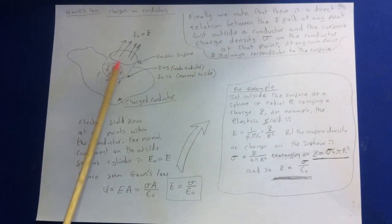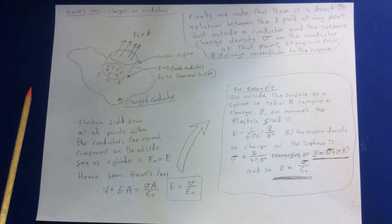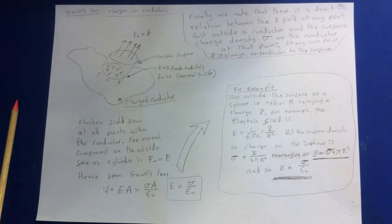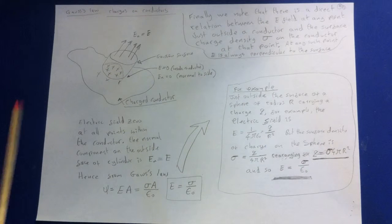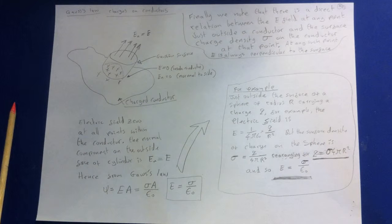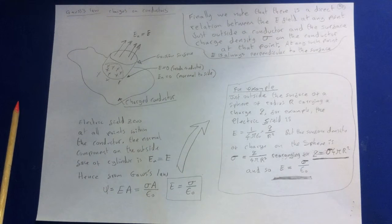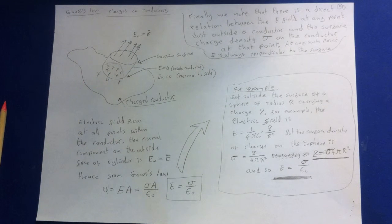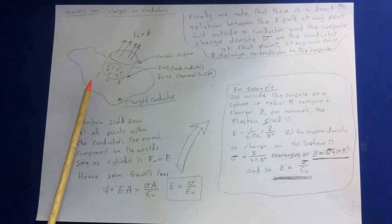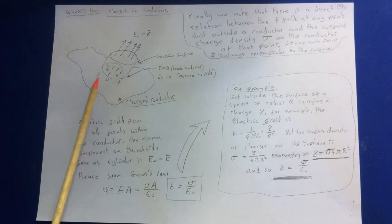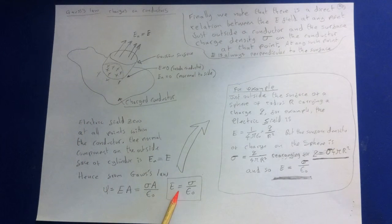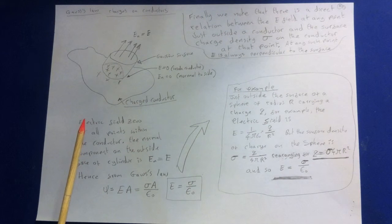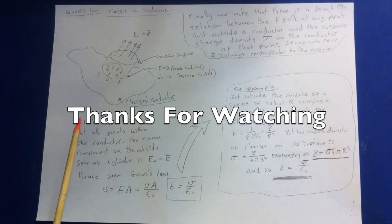One end face with area A lies within the conductor and the other lies just outside. The electric field is zero at all points within the conductor. Outside the conductor, the normal component of the electric field is zero at the side walls of the cylinder. At the end faces, the normal component is equal to the electric field. Hence from Gauss's law, the electric field times the area is equal to the charge density times the area over epsilon zero. This equation agrees with the results already obtained for spherical, cylindrical and plane surfaces.